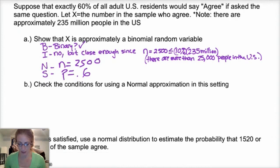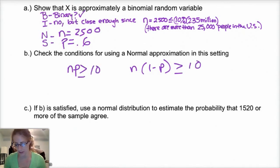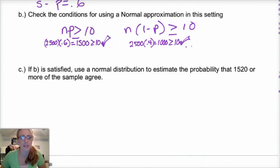B asks you to check conditions for normal approximation. And so you just want to check that N times P and N times 1 minus P are both greater than or equal to 10. Okay, and you actually have to calculate those out. So, N is 2,500, P is 0.6, 1 minus P is 0.4. So, check both of those. So, N times P is 1,500, and N times 1 minus P is 1,000. Both those are greater than 10. So, we're good.